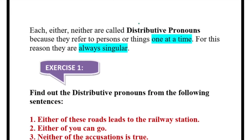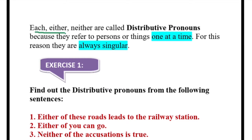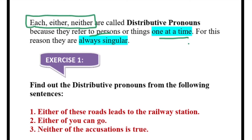So what are the words used in distributive pronouns? Write them down: 'each,' 'either,' 'neither.' These are the words you can use in case of distributive pronoun. What do you mean by distributive pronoun? When you refer to persons or things one at a time — this highlighted word is important — one at a time. I come into your class and say 'everyone must take out their books' — this is an incorrect sentence. You have to say 'everyone must take out his book' — because 'everyone' means one at a time.